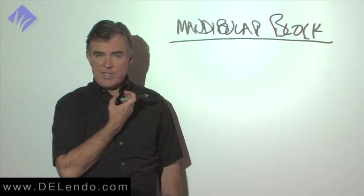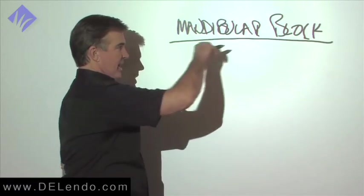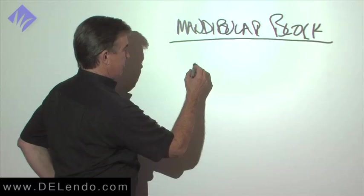Lower molars all have accessory innervation, all of them. So the mandibular block knocks out 80% and the infiltration, the rest.